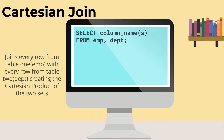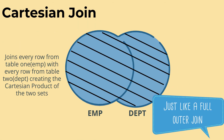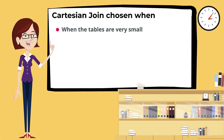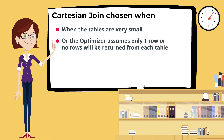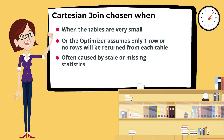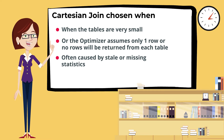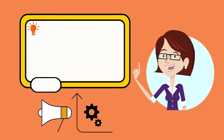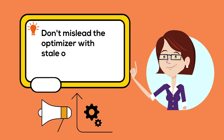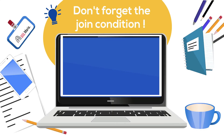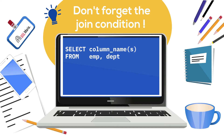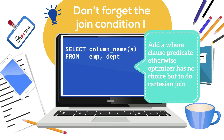Very similar to a Cartesian product, one where we join all the rows from one table to all the rows in the other table. A Cartesian product is typically only chosen if the objects are very tiny — only one row or no rows. So if I've got stale or missing statistics, Cartesian products can pop up because the optimizer thinks there won't be any rows when in fact there are a lot, because I've misled the optimizer with bad stats. It's also chosen if I forget the join condition in a complex SQL statement.